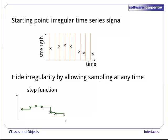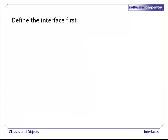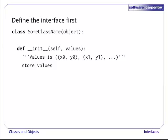The value at time t is just the most recently seen value. Another is linear interpolation, and there are many others. To implement this using objects, we start by defining the interface that we want. We're going to create a class, we'll figure out its name in a moment, whose constructor takes a list of x-y pairs and stores them somehow.